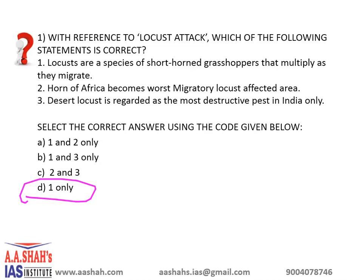They travel in swarms. Recently, Pakistan and Somalia have declared locust emergencies. The Food and Agricultural Organization has identified three hotspots of threatening locust activity: one is Horn of Africa, the second is the Red Sea area including Saudi Arabia, Oman, and Yemen, and the third is South West Asia which includes India.